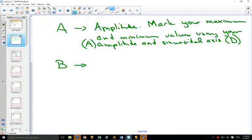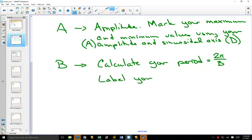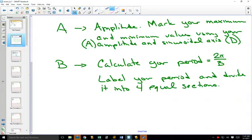Your B value is going to help you calculate your period. Your B value isn't your period, but remember we have that formula that your period is 2π over your B value. So once you've calculated your period, just like we did every single time when we graphed in 6.5, you're going to label your period on your x-axis and divide it into four equal sections.